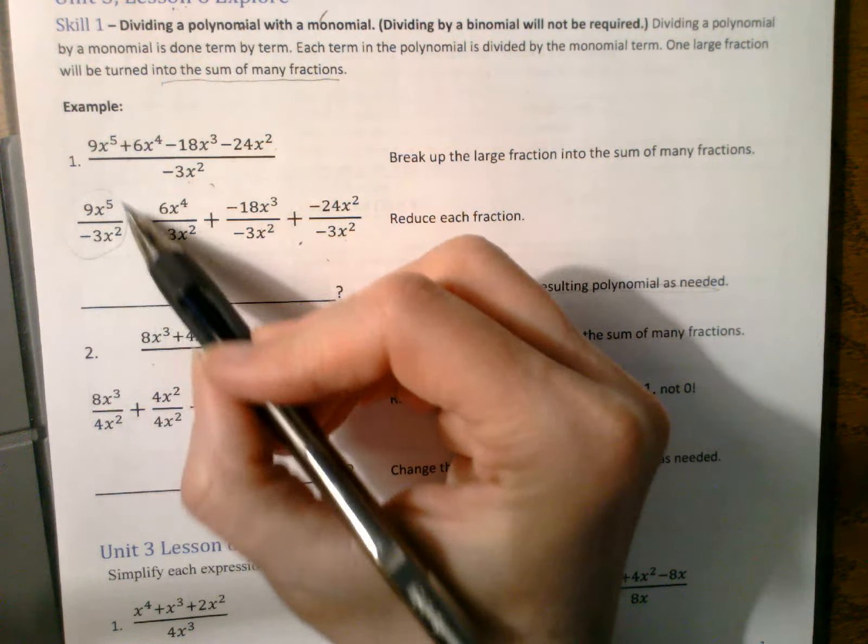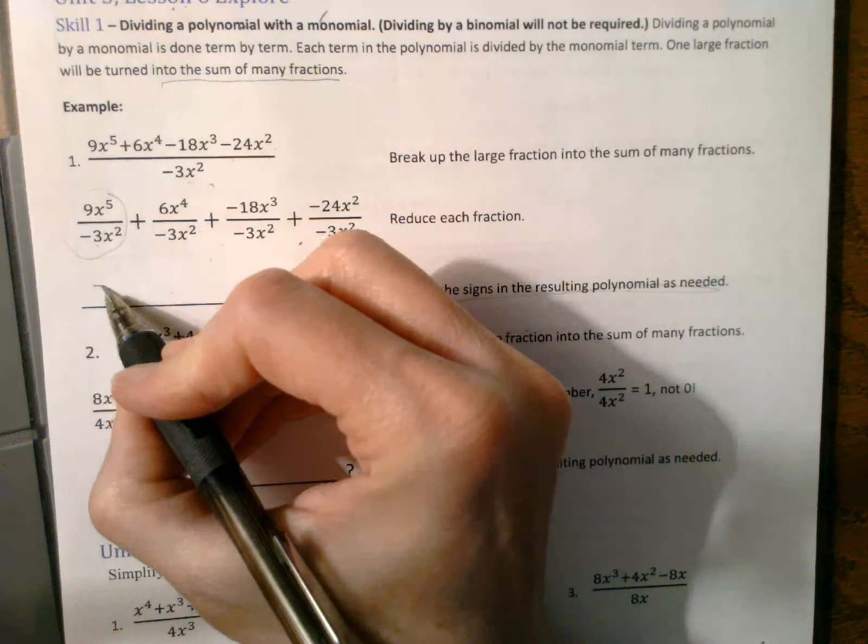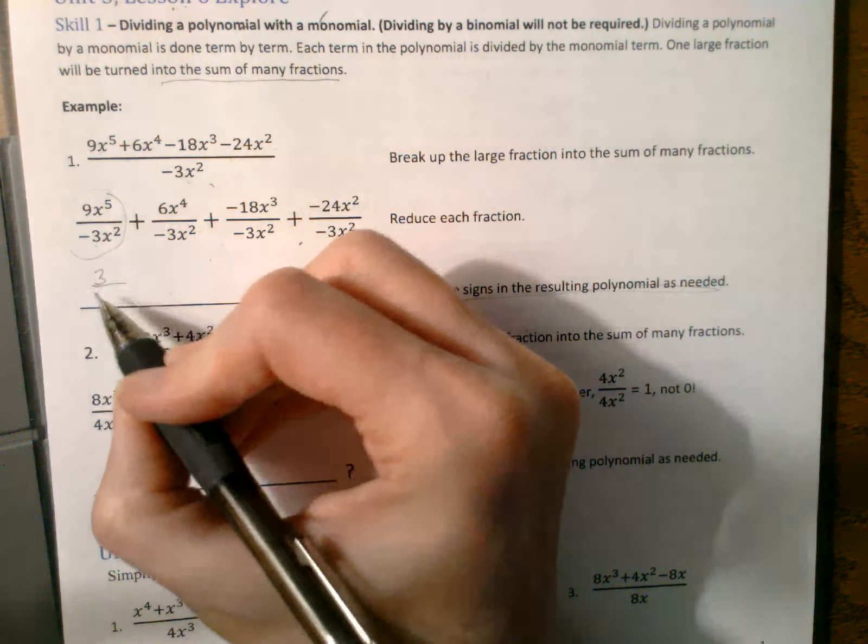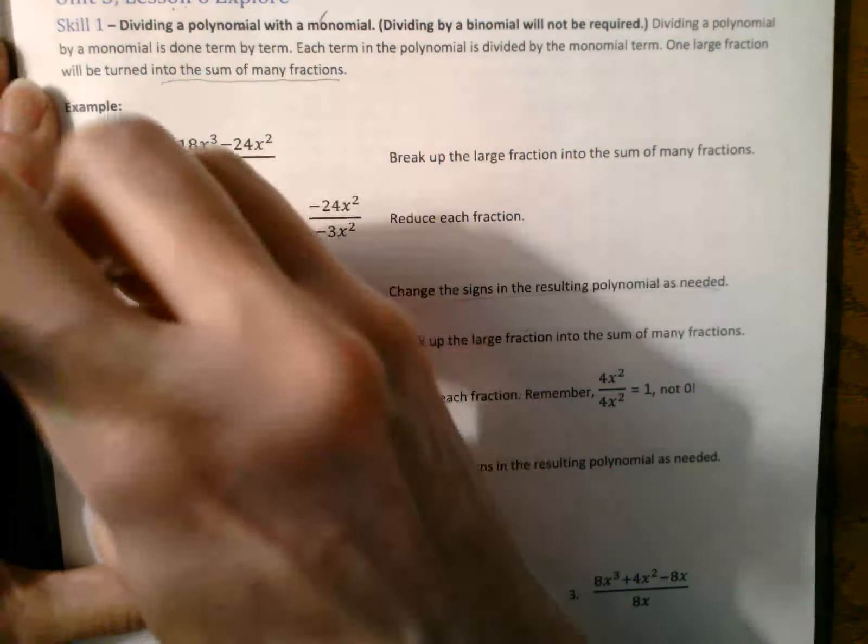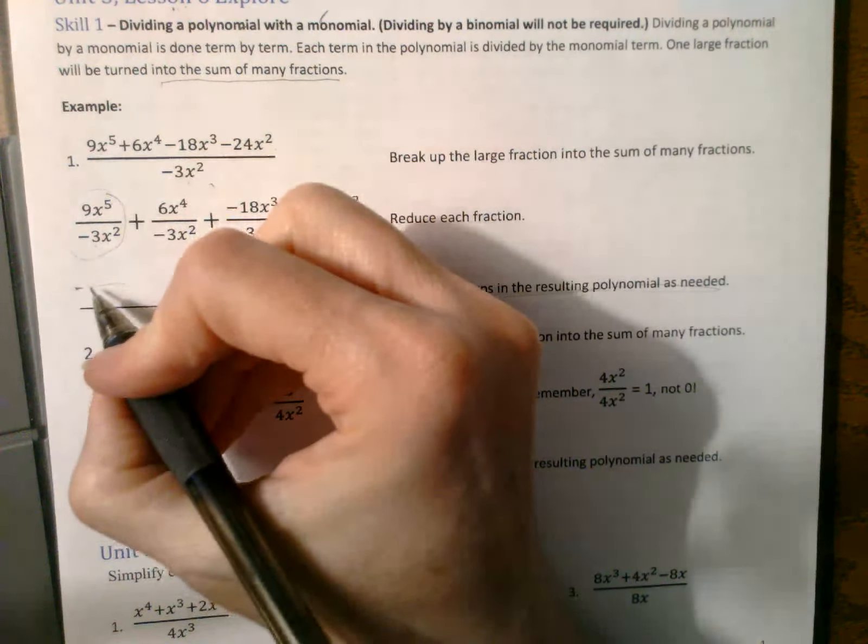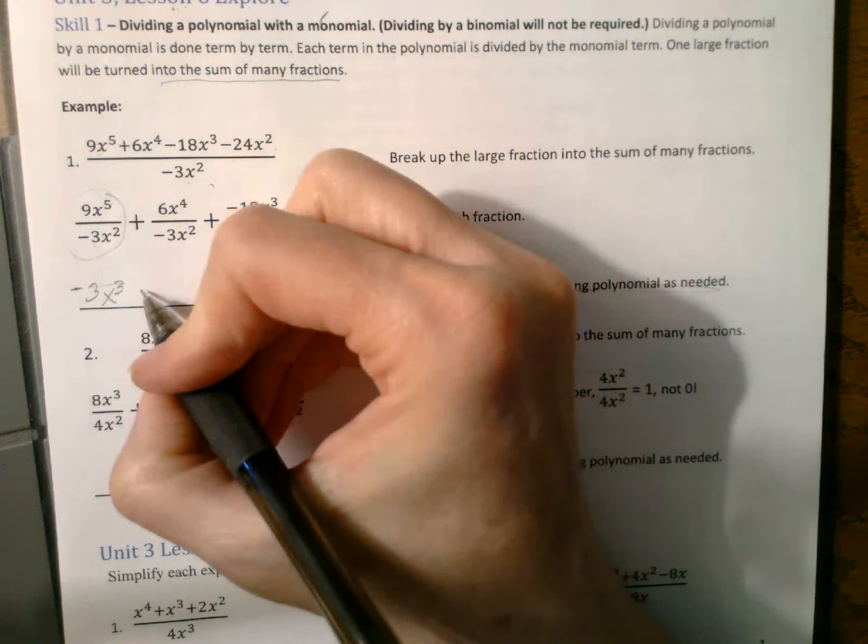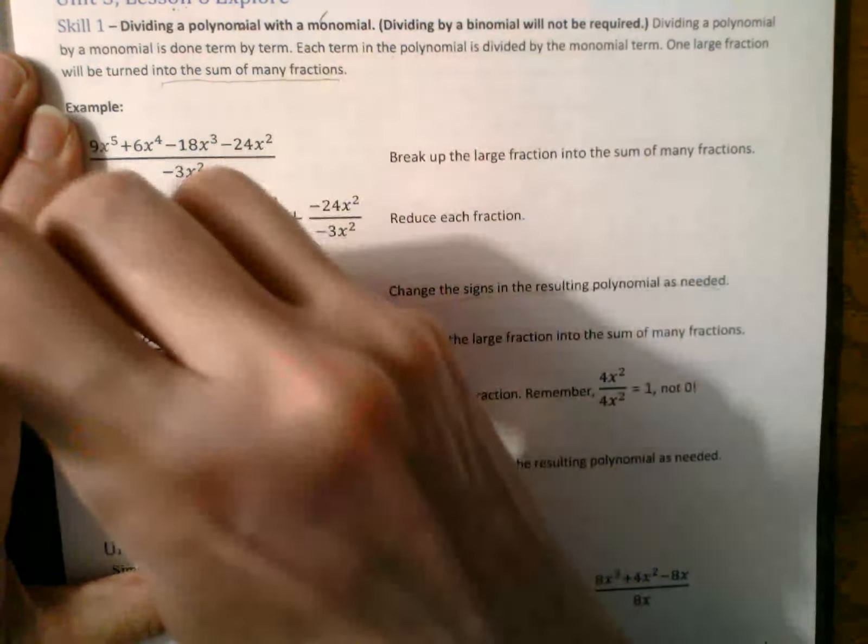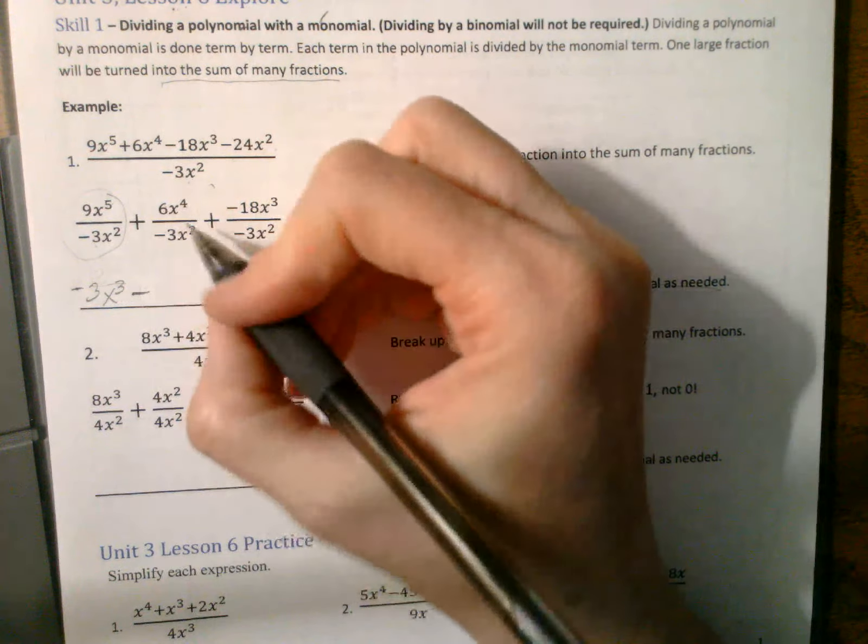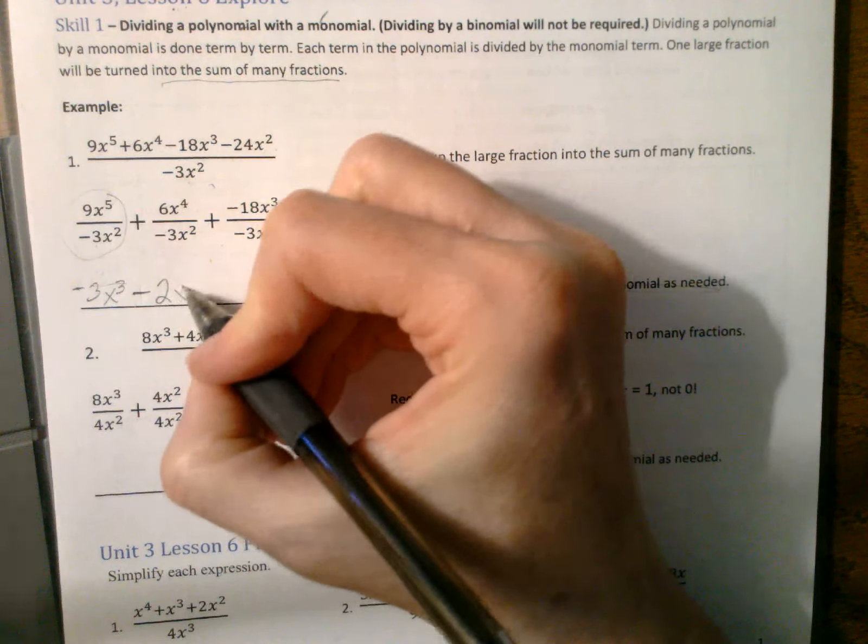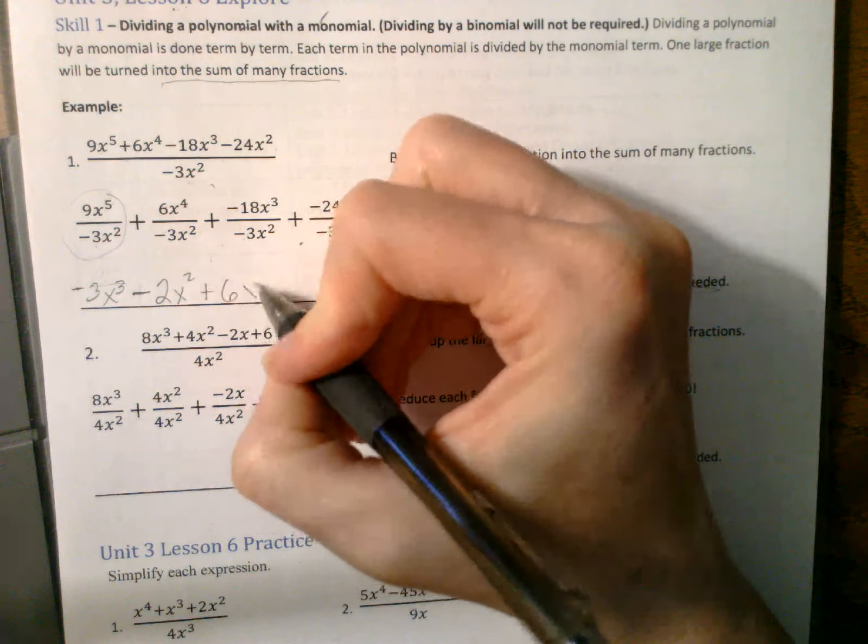So just look at this one by itself first. We have 9 on top and a negative 3 underneath. So that's going to reduce away to a 3 and the negative stays. Just put the negative out here. And then we have 5x. Looks like I'm not going to have anything left on the bottom. So negative 3x³ is my first term. This is going to turn into a positive and a minus. So this is going to be a negative.